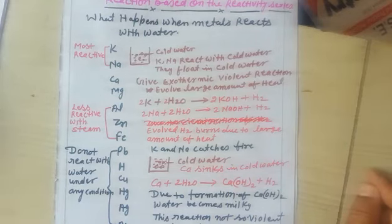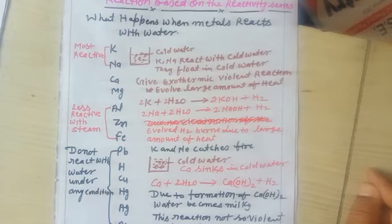Aluminium, zinc, and iron are less reactive metals. Lead, hydrogen, copper, mercury, silver, and gold do not react with water under any condition because they are very less reactive metals.